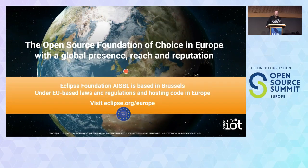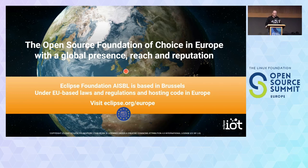One last thing: the Eclipse Foundation moved to Europe. We were originally a US-based non-profit; we are now a Belgian-based non-profit. Already close to half of our staff was in Europe — in Germany, France, Spain, Italy, Sweden, and more. So some companies may announce they're opening offices in Europe; in our case, half our staff is already there. We take Europe seriously at the Eclipse Foundation, and this is why we are here today.